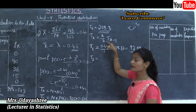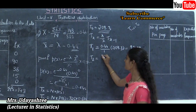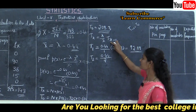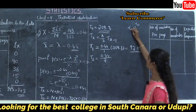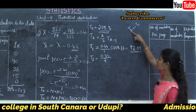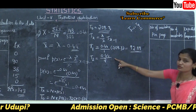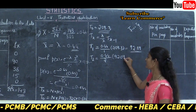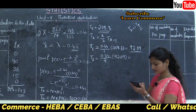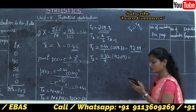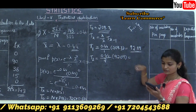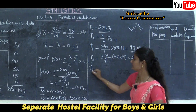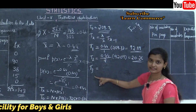Next, calculate T(2). Substituting X = 2 into the recurrence relation: T(2) = (0.44 / 2) × T(1) = (0.44 / 2) × 92.09 = 20.26.